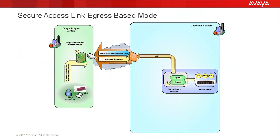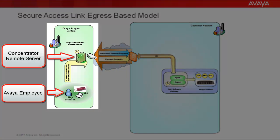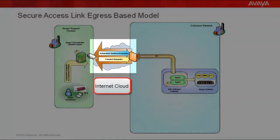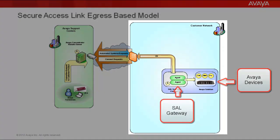To see how this works, let's work our way through this diagram which illustrates the different activities that occur. As you can see, we have three parts to this diagram. On the left, we have what represents the Avaya support center. In the center, we have the network or the internet cloud. And on the right, we have the customer premises or customer network.